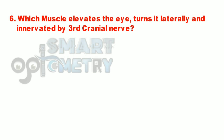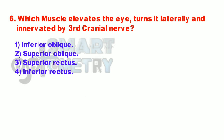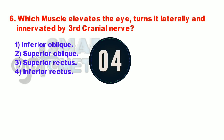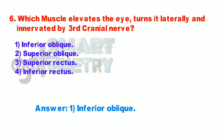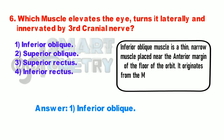Q6. Which muscle elevates the eye, turns it laterally, and is innervated by the third cranial nerve? 1. Inferior oblique. 2. Superior oblique. 3. Superior rectus. 4. Inferior rectus. Inferior oblique muscle is a thin narrow muscle placed near the anterior margin of the floor of the orbit. It originates from the maxillary bone and is innervated by the third cranial nerve.